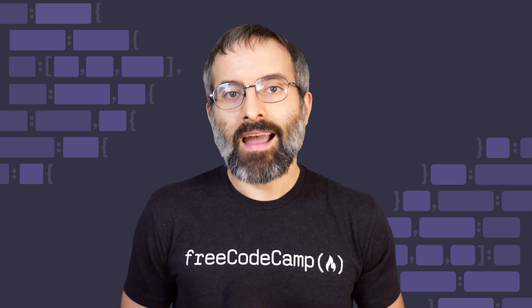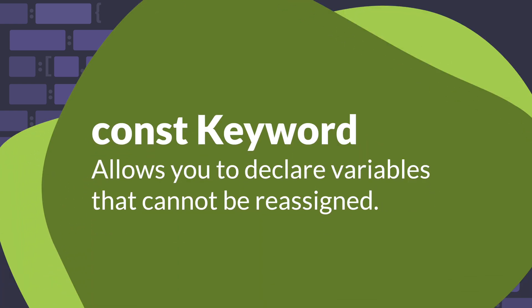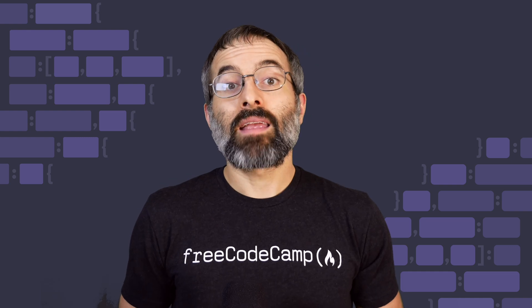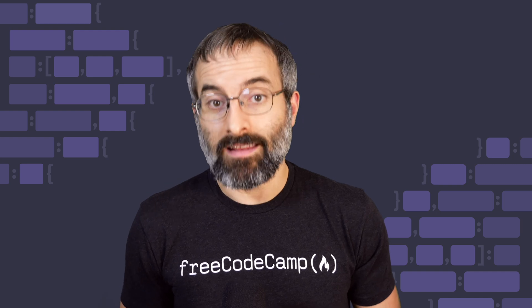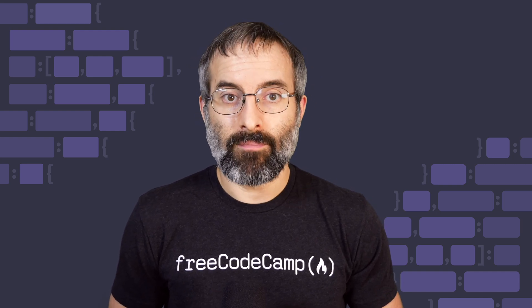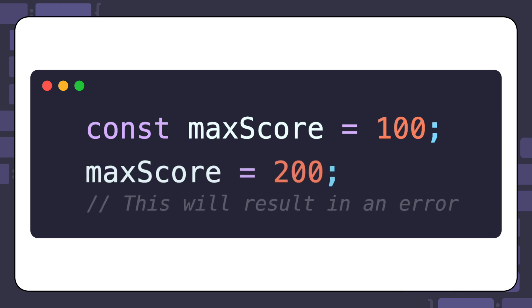On the other hand, const is used to declare variables that are constant. Once you assign a value to a variable declared with const, you cannot reassign it. This makes const ideal for values that you don't want to change accidentally during the execution of your program. Here's an example of declaring and assigning a variable with const. Once maxScore is assigned the value 100, it cannot be changed. Trying to reassign a value to a const variable will throw an error in your JavaScript console, as const variables are immutable.